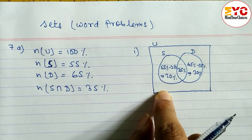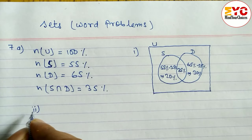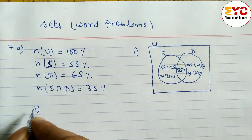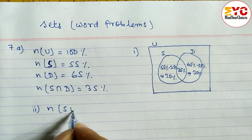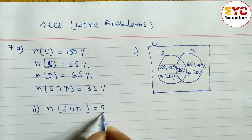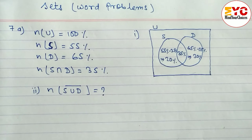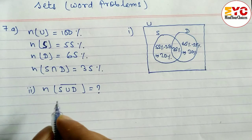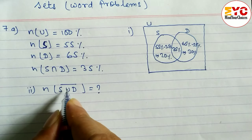In question number two, we have to find the percent of people who do not like to listen to the song as well as watch the dance — meaning those who don't like both. So we need to find n(S ∪ D) complement. To find the complement, we first need to find n(S ∪ D).